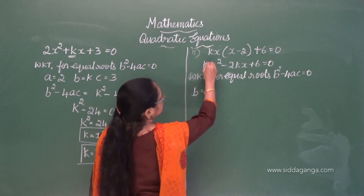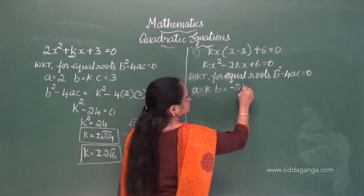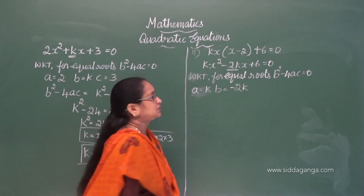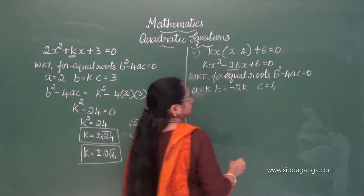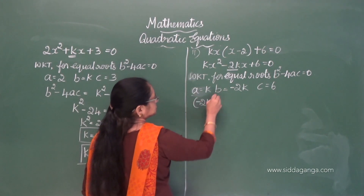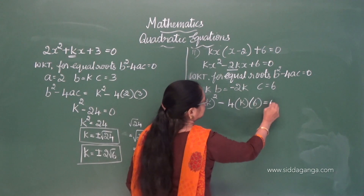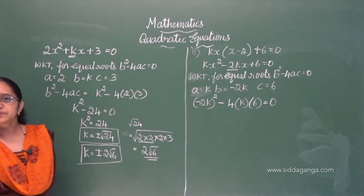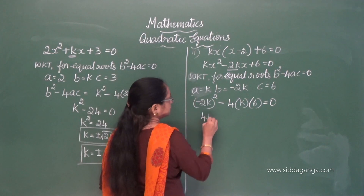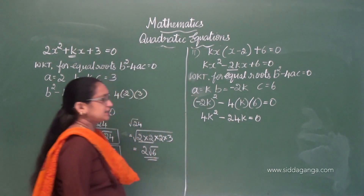Here a = k, b = −2k, and c = 6. So b² − 4ac means (2k)² − 4 × k × 6 = 0. This becomes 4k² − 24k = 0.